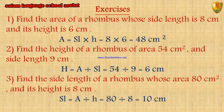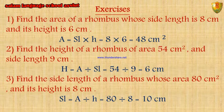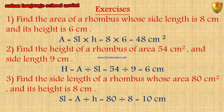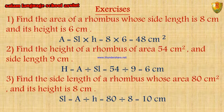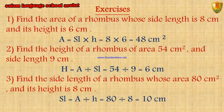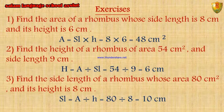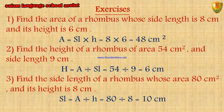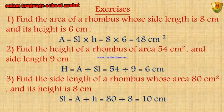Exercises. Number 1: find the area of a rhombus whose side length is 8 cm and its height is 6 cm. Area equals side length times height, equals 8 times 6, equals 48 cm². Number 2: find the height of a rhombus of area 54 cm² and side length 9 cm. Height equals area divided by side length, equals 54 divided by 9, equals 6 cm. Number 3: find the side length of a rhombus whose area is 80 cm² and its height is 8 cm. Side length equals area divided by height, equals 80 divided by 8, equals 10 cm.